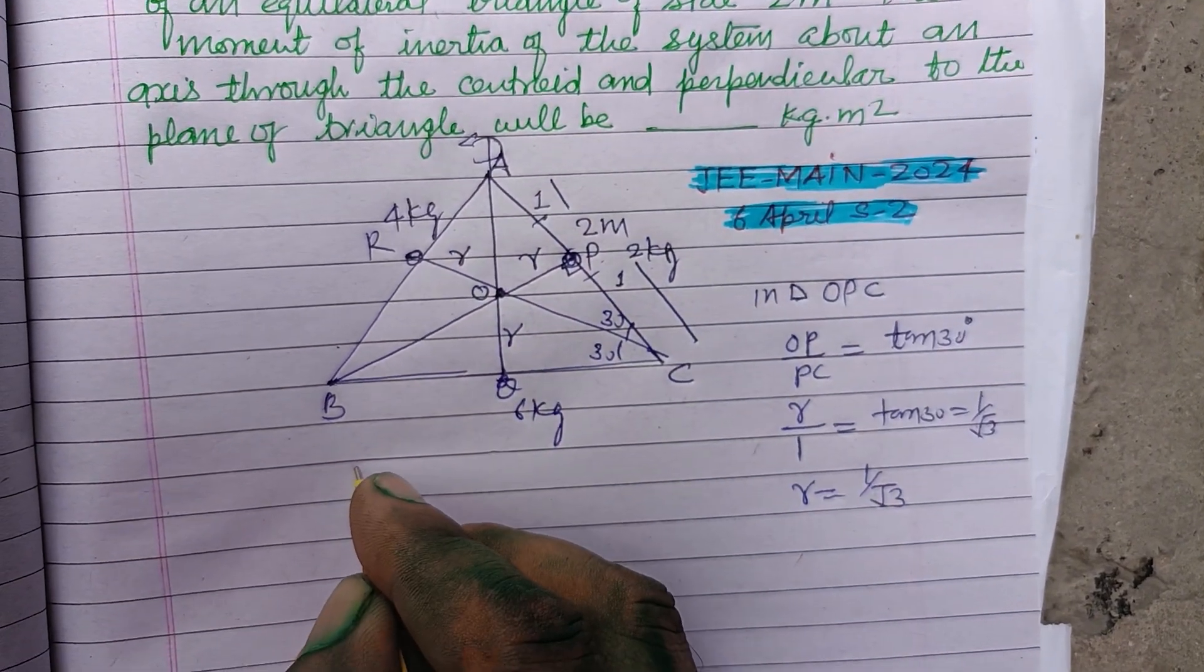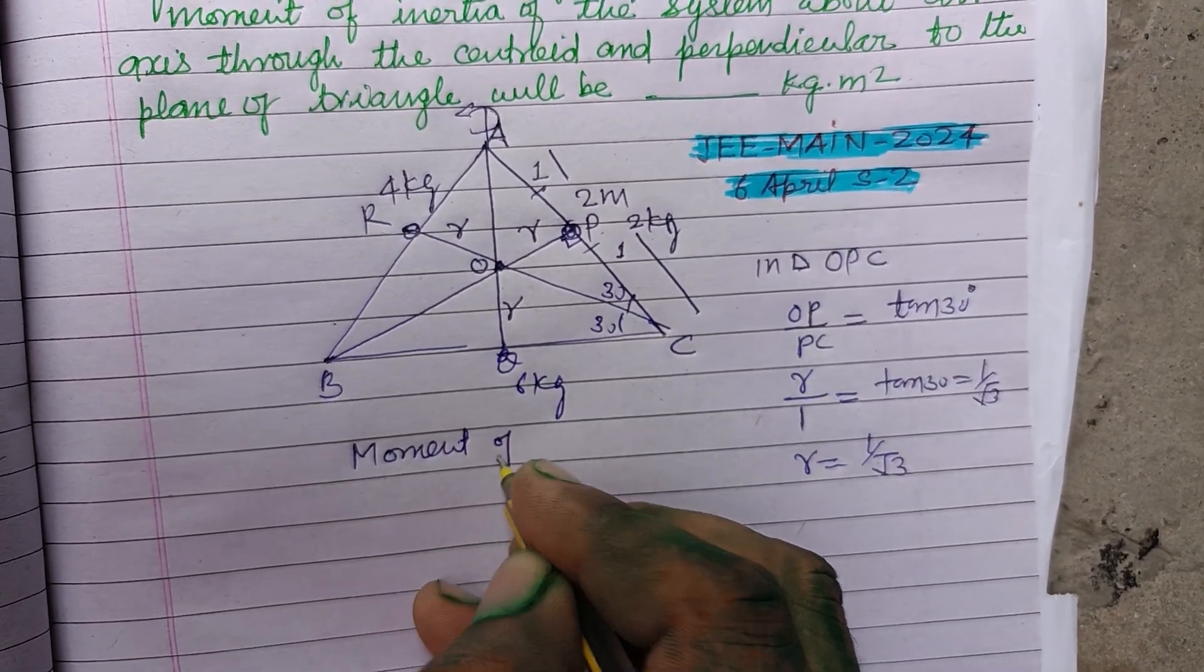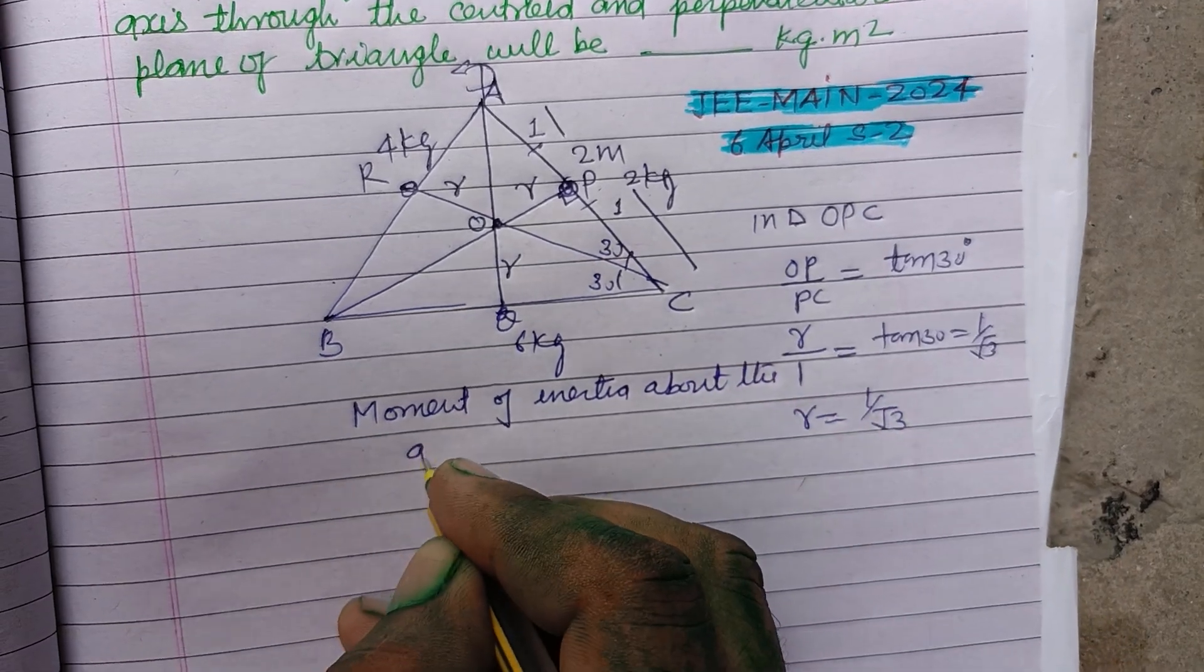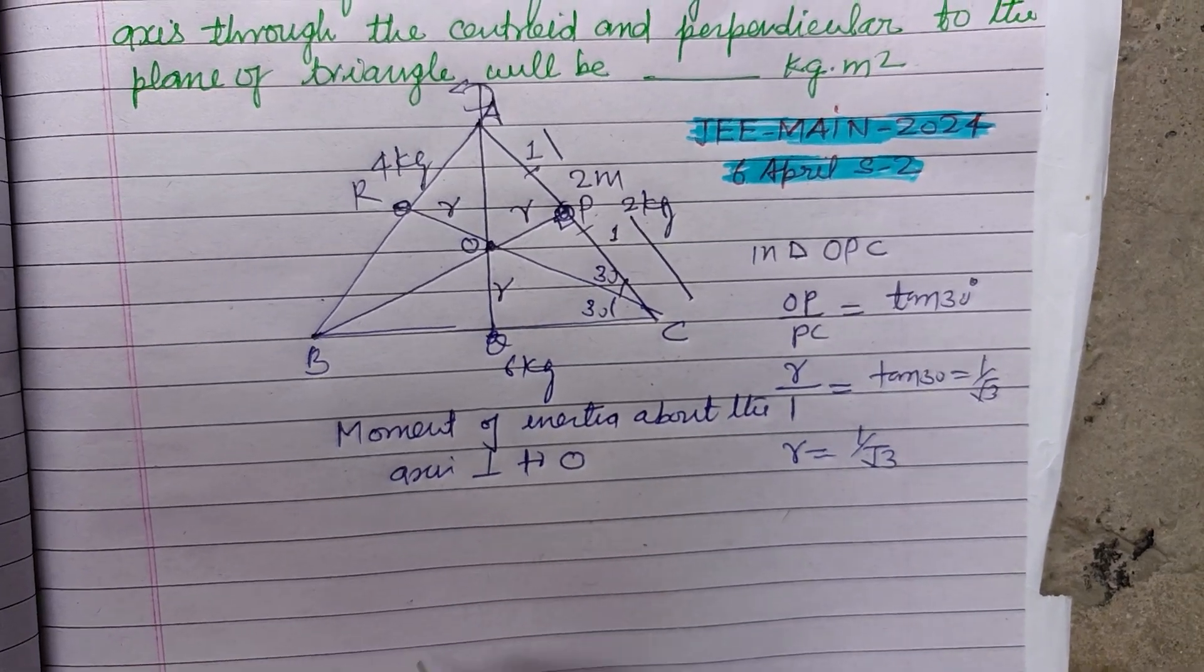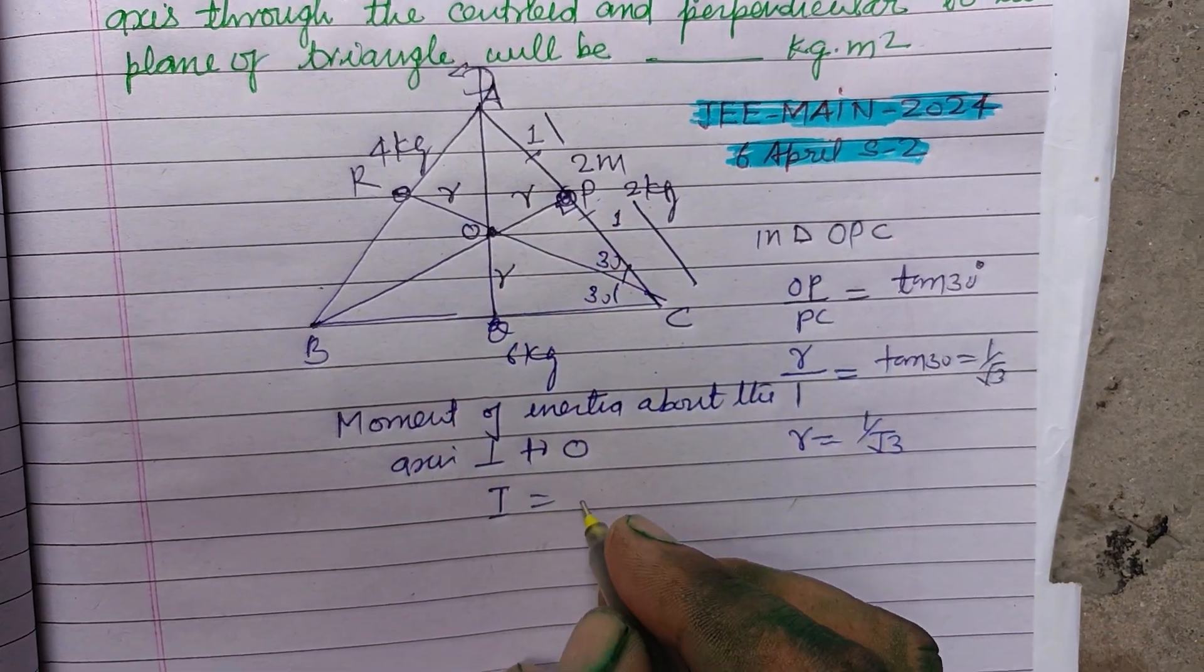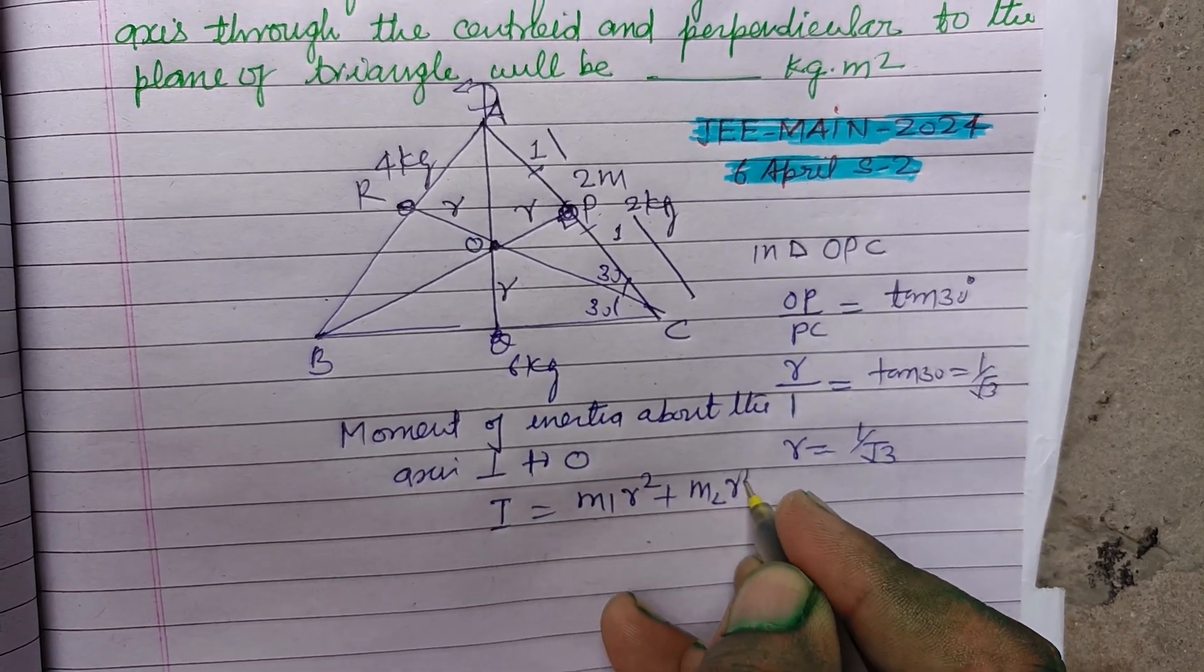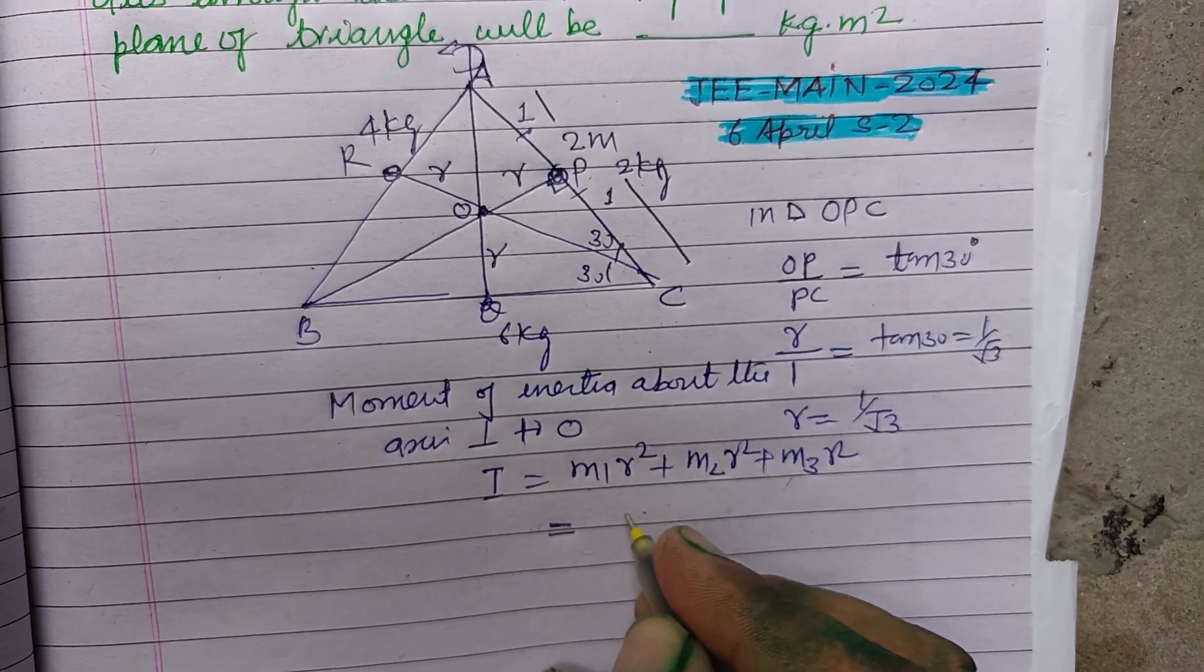So moment of inertia about the axis perpendicular to O, this will be I equal to MR square. M is M1 R square, M2 R square and M3 R square. Because distance is same, therefore R square M1 plus M2 plus M3.